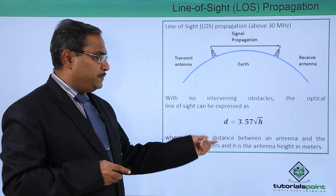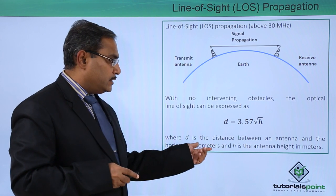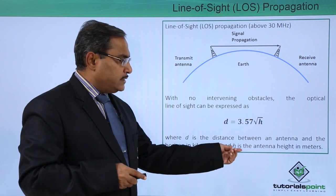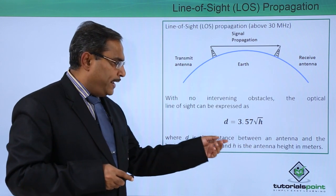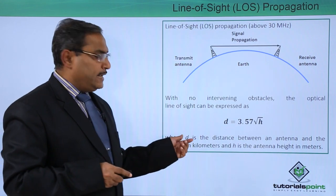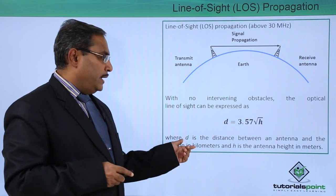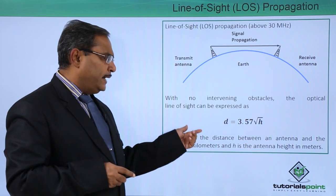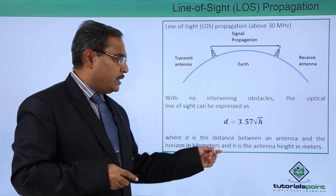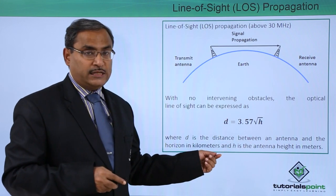D is the distance between the antenna and the horizon in kilometers, and H is the antenna height which will be expressed in the terms of meters. D is the distance between these two antennas in horizon and it is expressed in kilometer, and this H is actually the antenna height which will be expressed in meter.